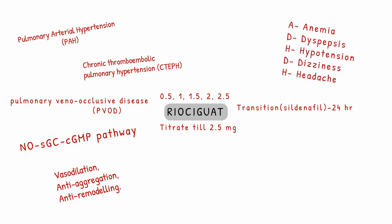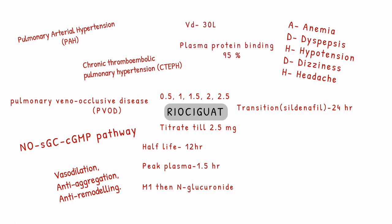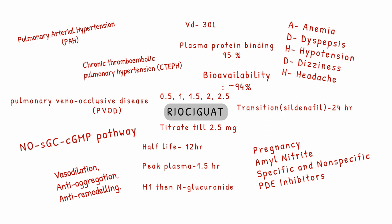Adverse reactions include anemia, dyspepsia, hypotension, dizziness, and headache. Pharmacokinetic parameters: half-life is 12 hours, peak plasma time is 1.5 hours, metabolism is via CYP1A1 to active metabolite M1 then to inactive N-glucuronide. Volume of distribution is 30 liters, plasma protein binding is 95%, and bioavailability is 94%. Contraindications include pregnancy and co-administration with amyl nitrate or specific and non-specific phosphodiesterase inhibitors.